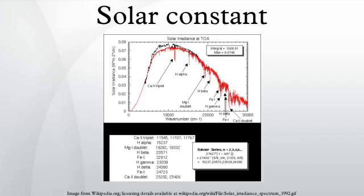In 1884, Samuel P. Langley attempted to estimate the solar constant from Mount Whitney in California. By taking readings at different times of day, he tried to correct for effects due to atmospheric absorption. However, the final value he proposed, 2.903 kilowatts per square meter, was much too large.